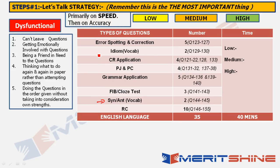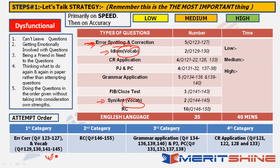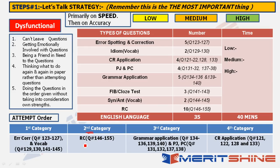My first priority category: I have a decent vocabulary and grammar. Direct questions like error spotting and error correction are either doable or not — speed is very high. Vocab takes very little time. So Category 1 (first priority) is: Q123–127 (error spotting/correction) and vocab questions Q129–130, Q141–145 (including the cloze test, which is an extension of vocabulary questions).